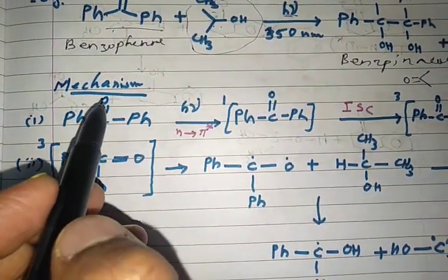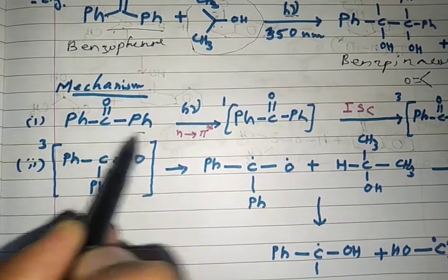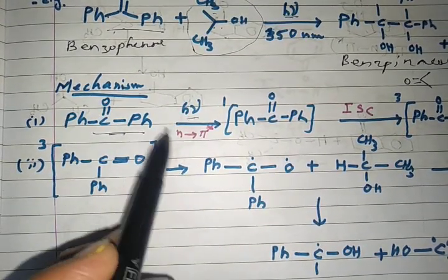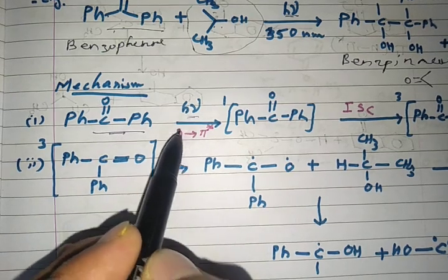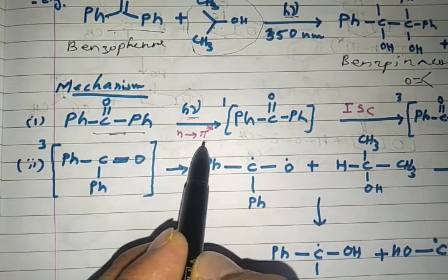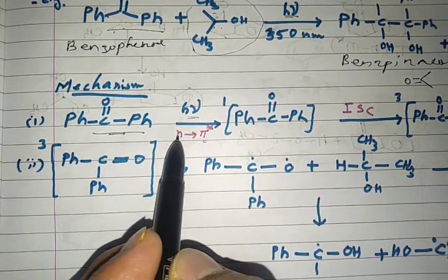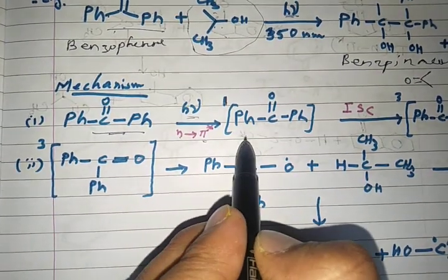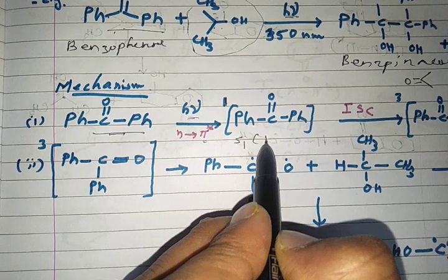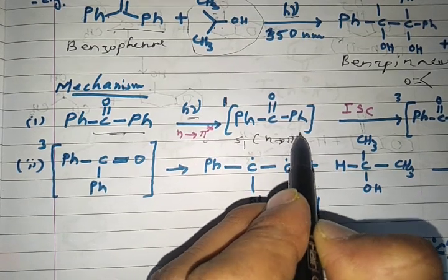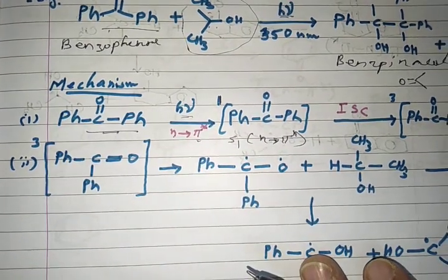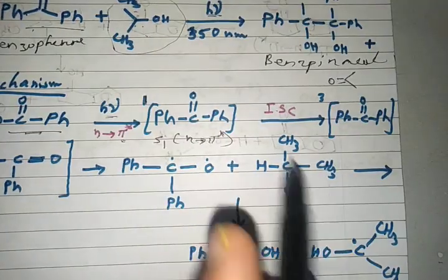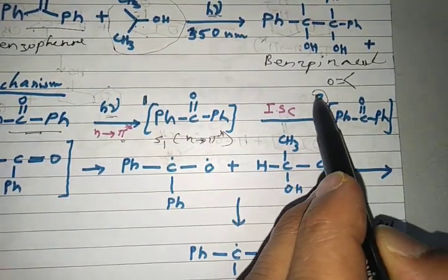Benzophenone absorbs light and the non-bonded electron goes to the anti-bonding, meaning the higher excited state. We can call this singlet S1. This then undergoes intersystem crossing and benzophenone goes to the triplet state. The triplet state means there is a change in the spin of the electron.